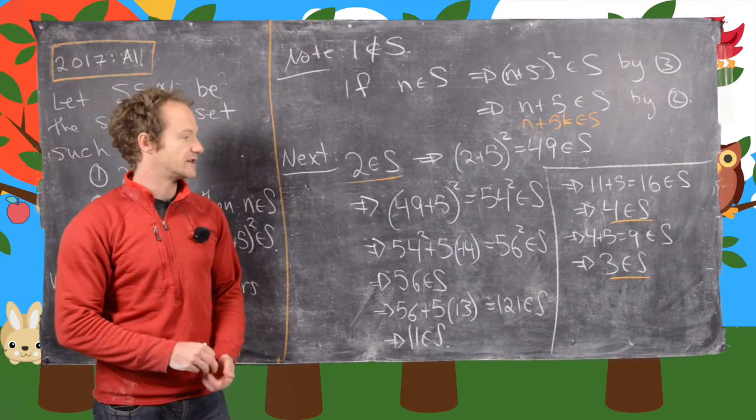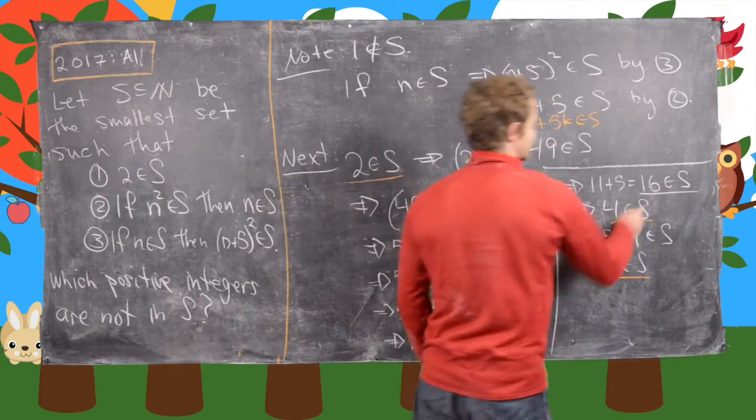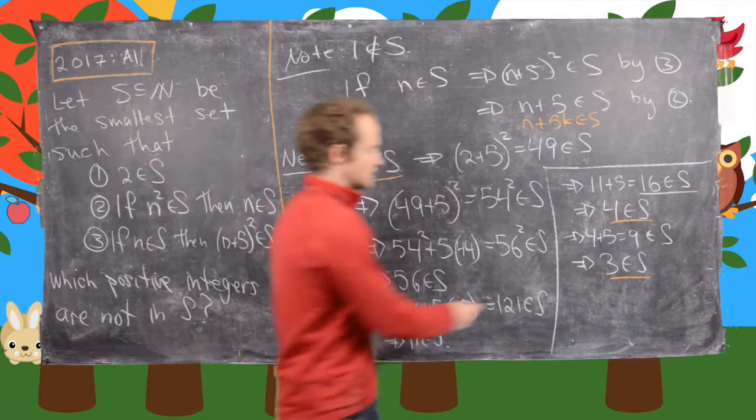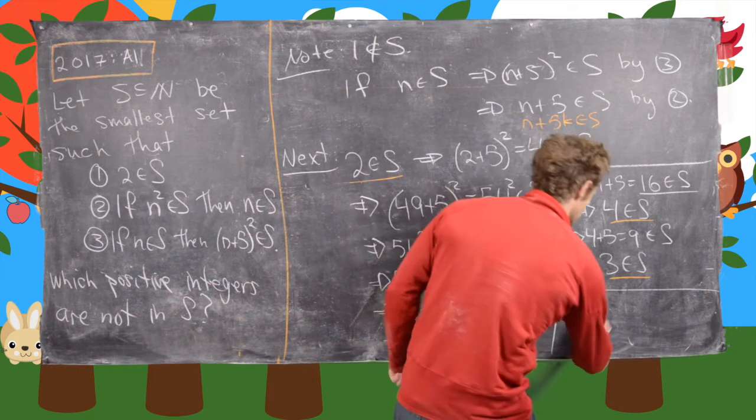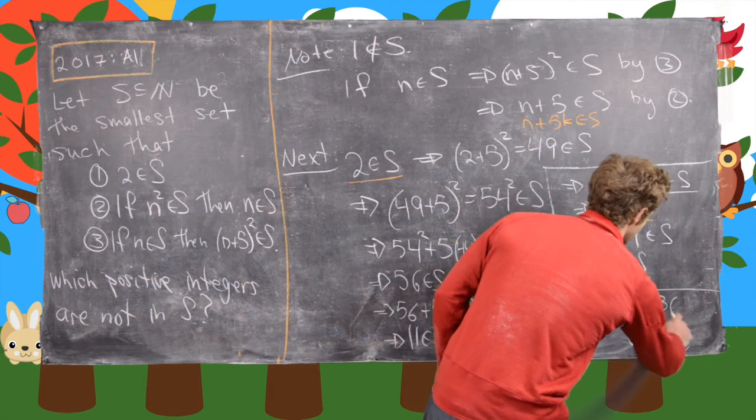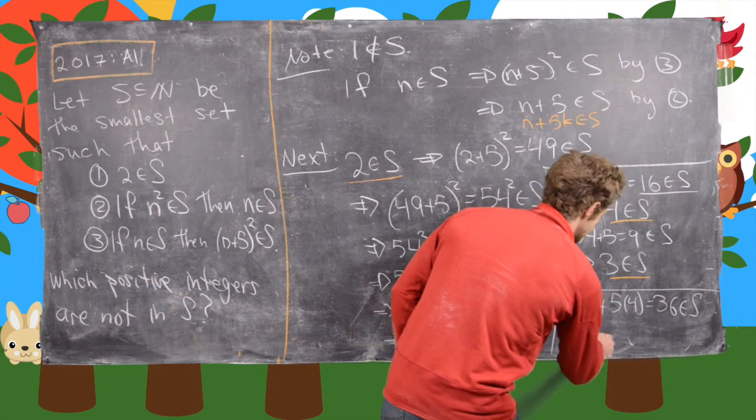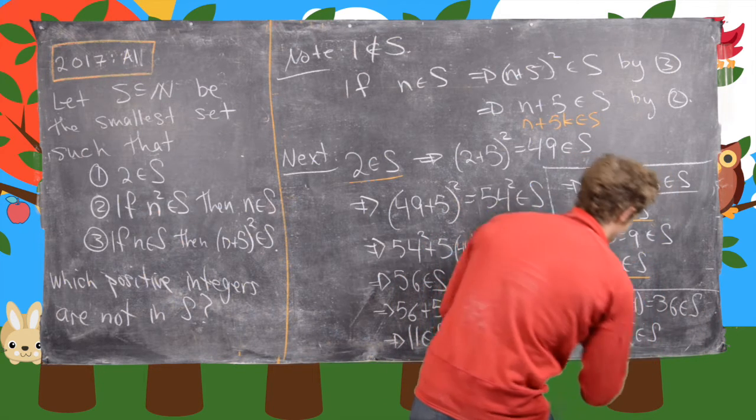So the next thing that we'll do is show that 6 is an element of S. And we'll do that by starting at this point. So let's do that. So notice we can do 16 plus 5 times 4 is equal to 36. So that's an element of S. But that tells us that 6 is an element of S.